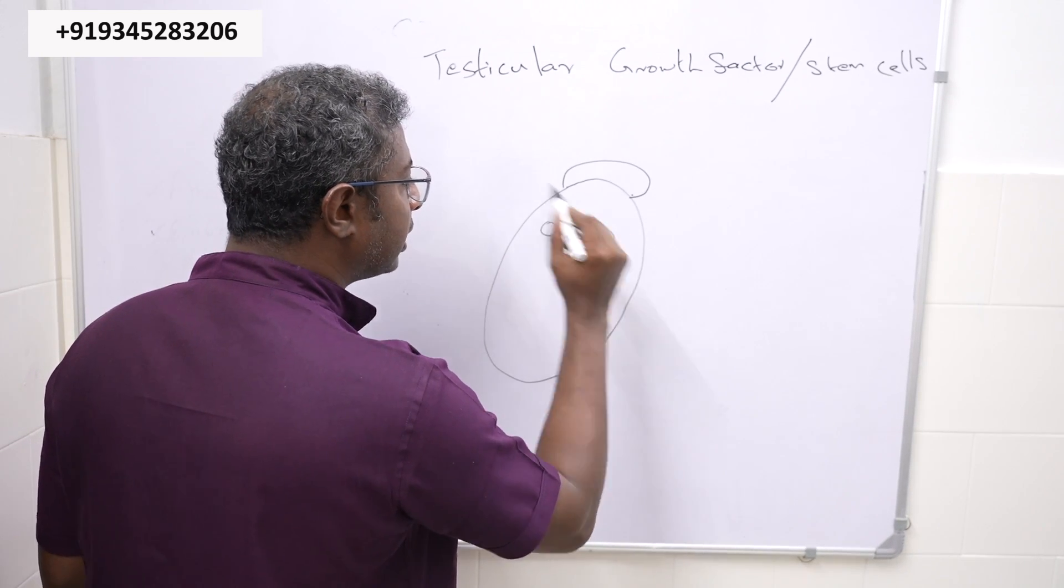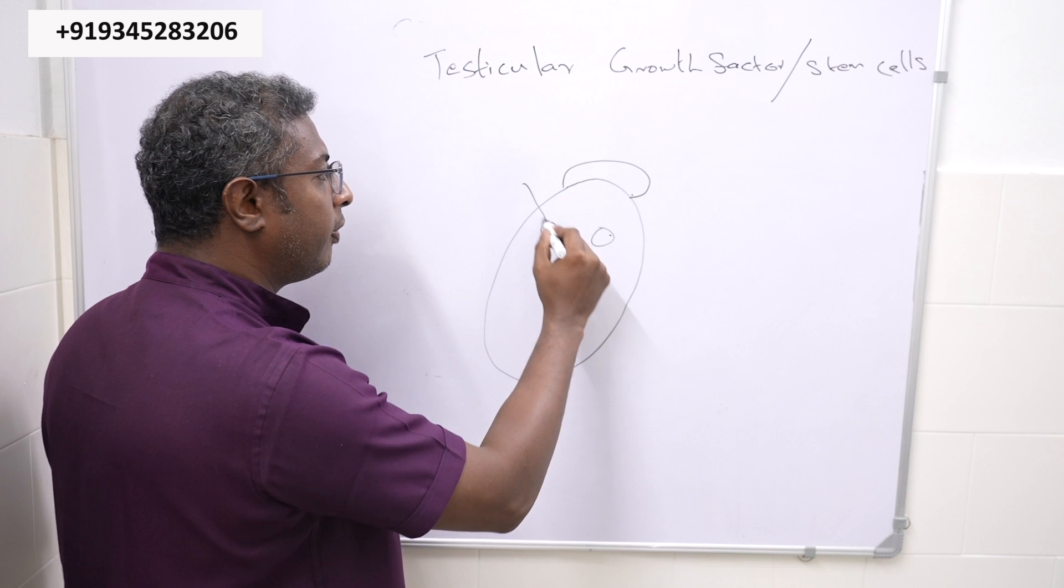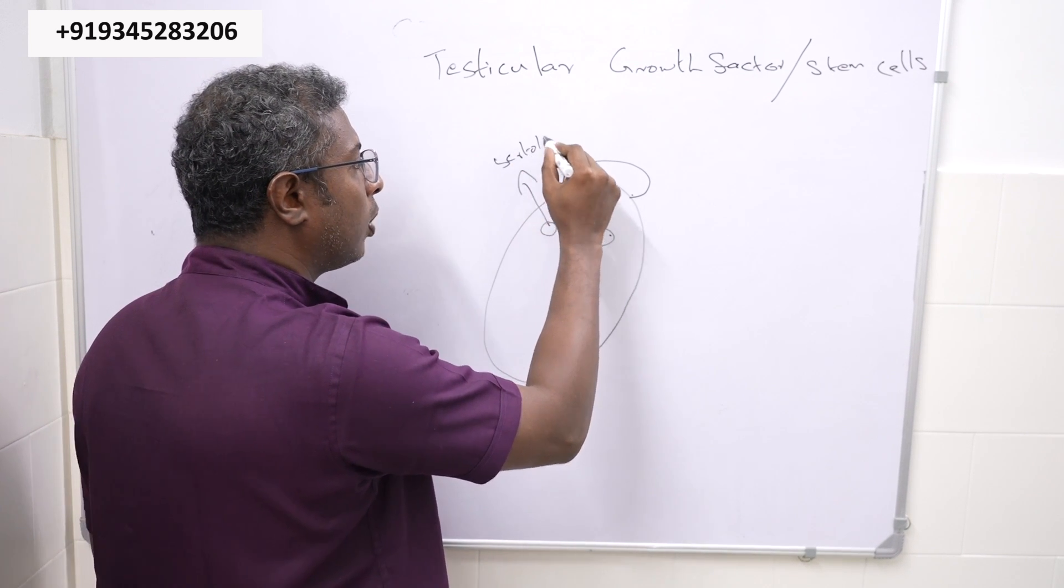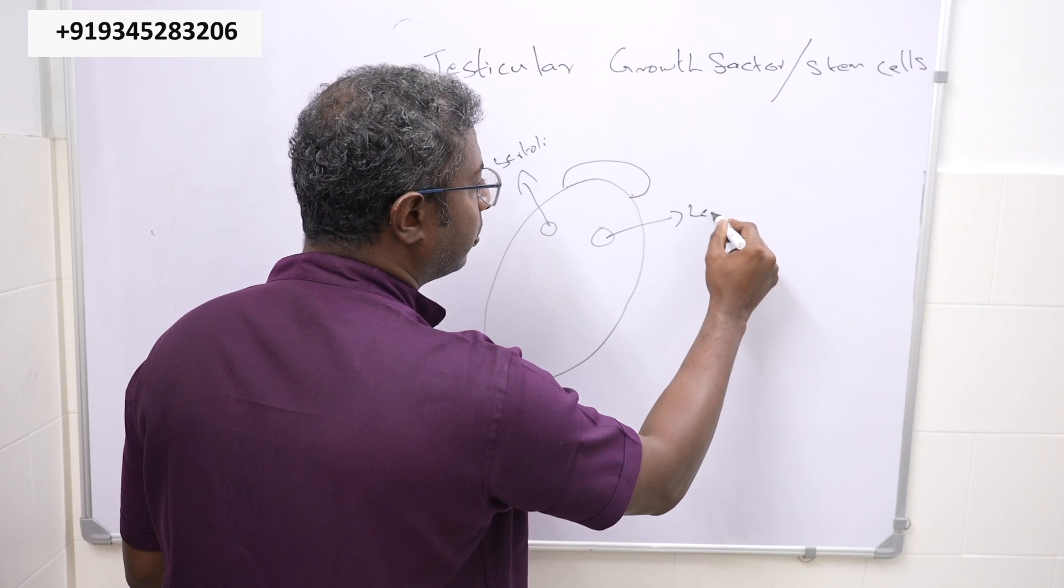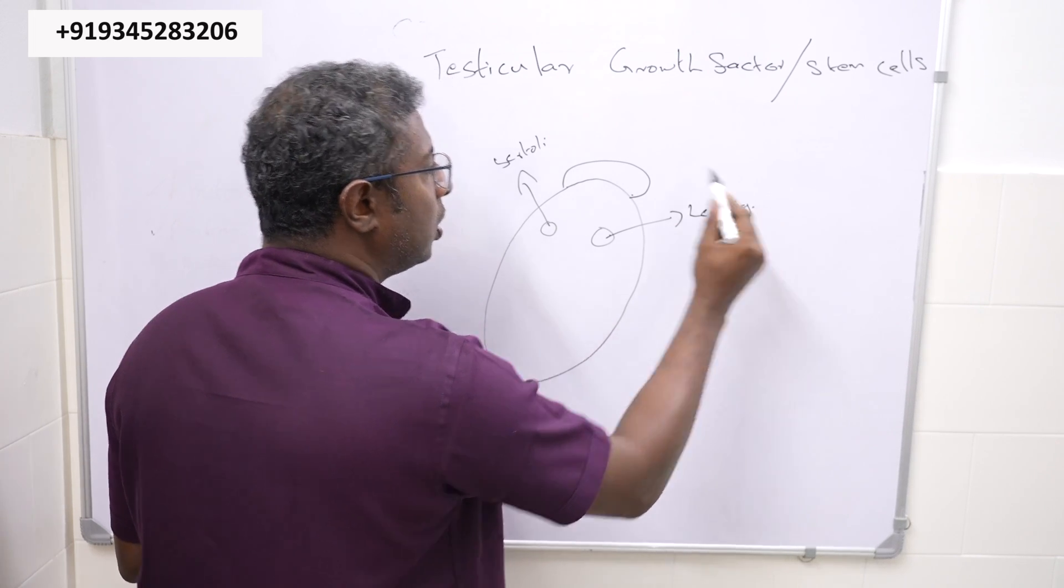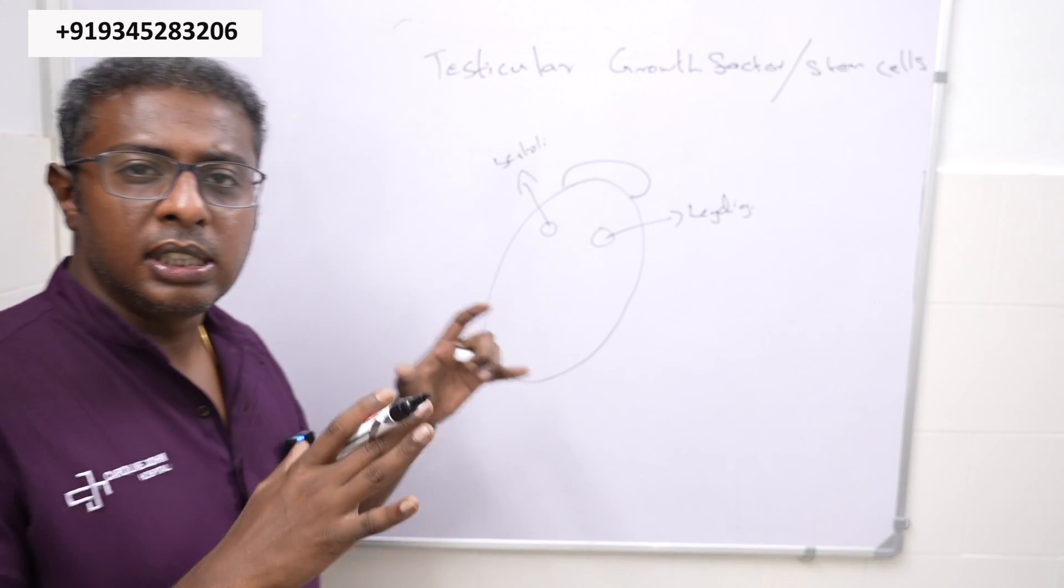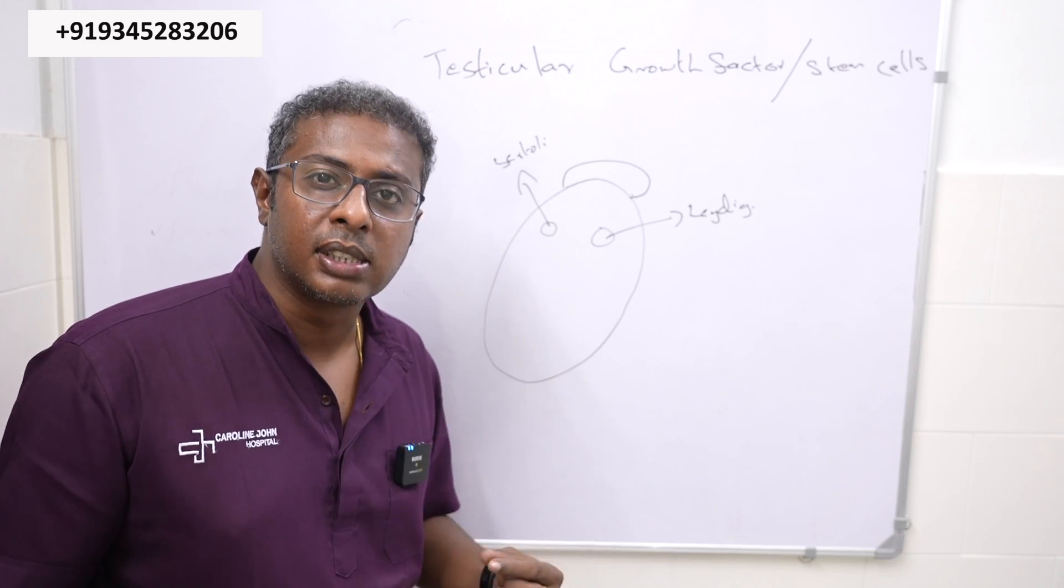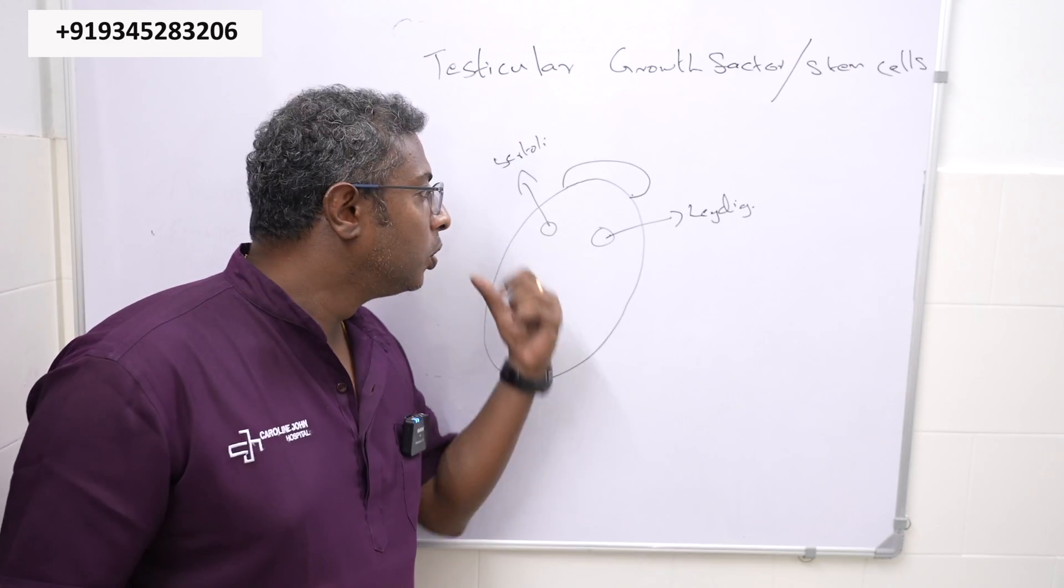There are two types of cells inside the testes. One is the sertoli cell and one more is the ledic cell. These are the main cells which help us to produce sperm.